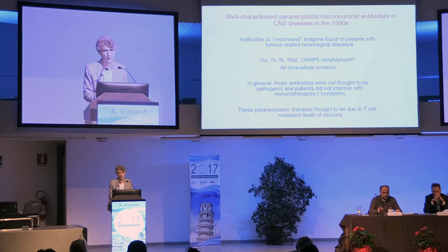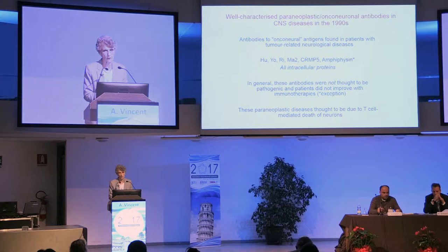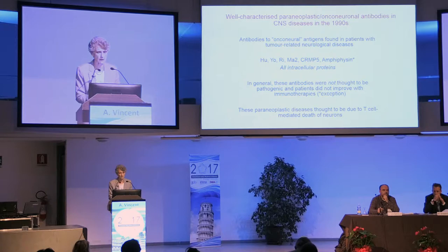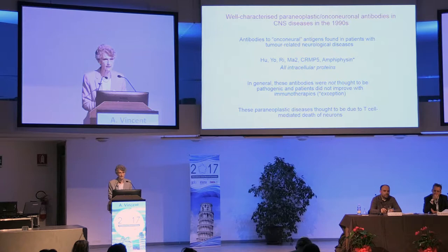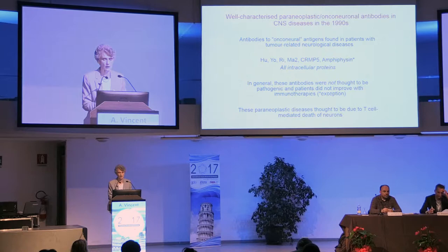Just to start with the onconeural antibodies - these are so well known that any clinician among you will have already heard about them. These are antibodies to onconeural antigens found in patients with tumour-related neurological diseases. They're all named after the first initials of the first patient's name, which is why you have those unusual names for them. These are intracellular proteins. In general, these antibodies were not thought to be pathogenic, and the patients did not improve with immunotherapies. One exception is amphiphysin, which is an intracellular protein, but sometimes the patients respond well to immunotherapies.